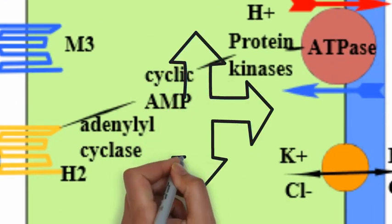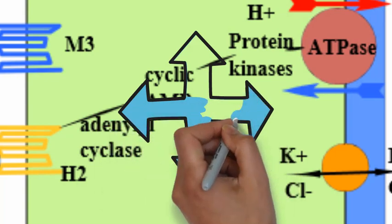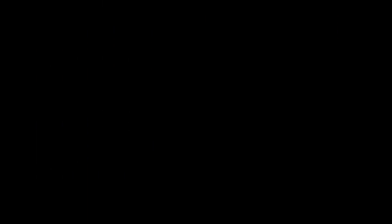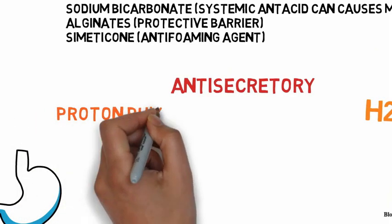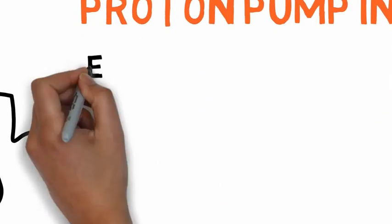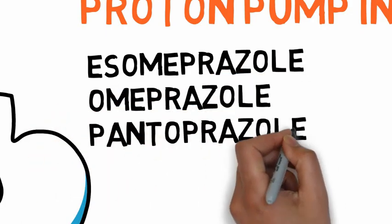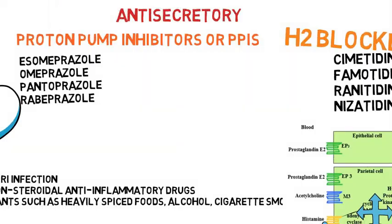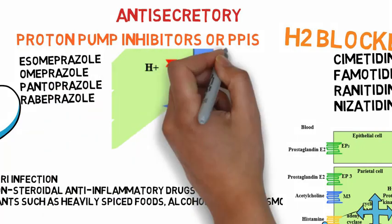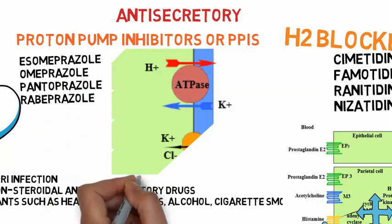The H2 blockers have been shown to be potent inhibitors of both meal-stimulated secretion and basal secretion of gastric acid. Proton pump inhibitors or PPIs include esomeprazole, omeprazole, pantoprazole and rabeprazole. The PPIs are acid-labile prodrugs that are administered orally as sustained-release, enteric-coated preparations.